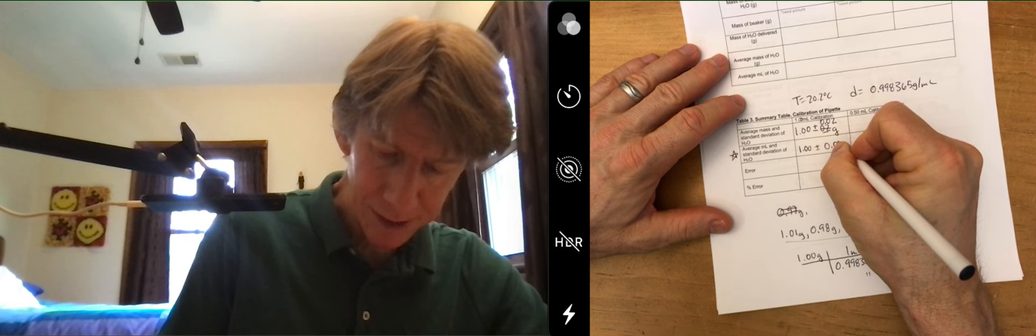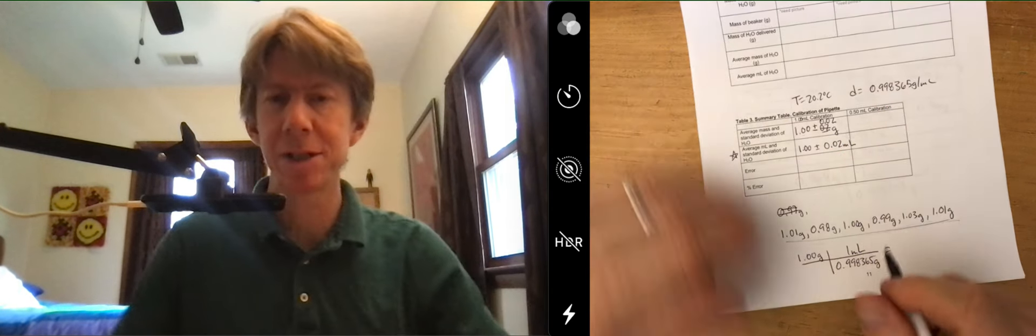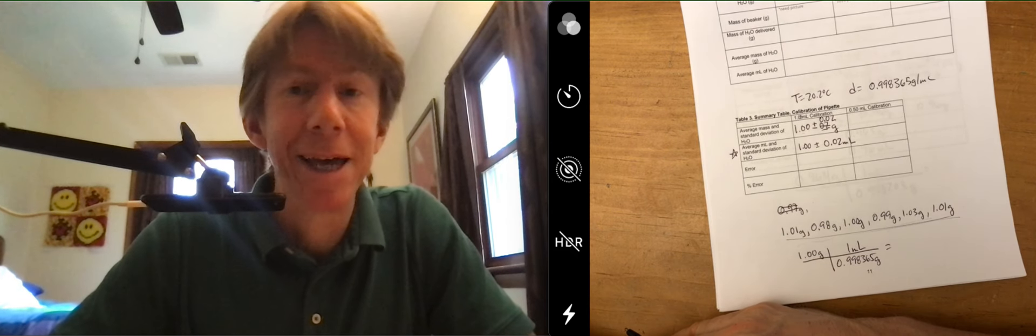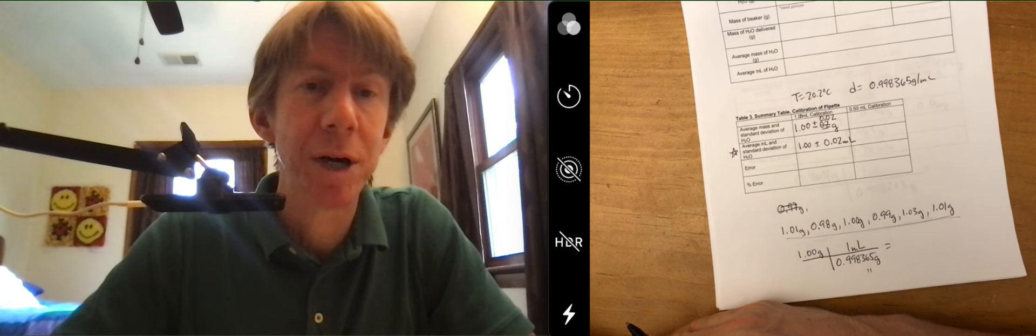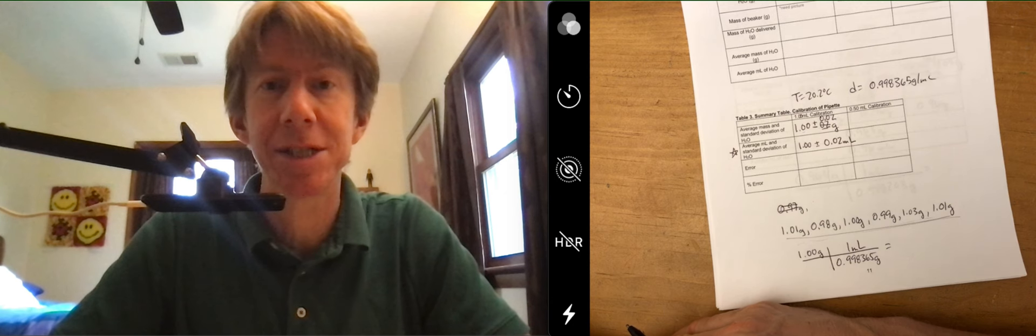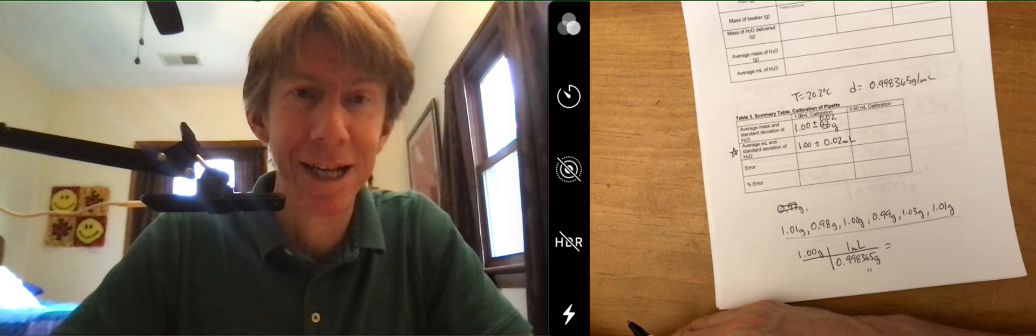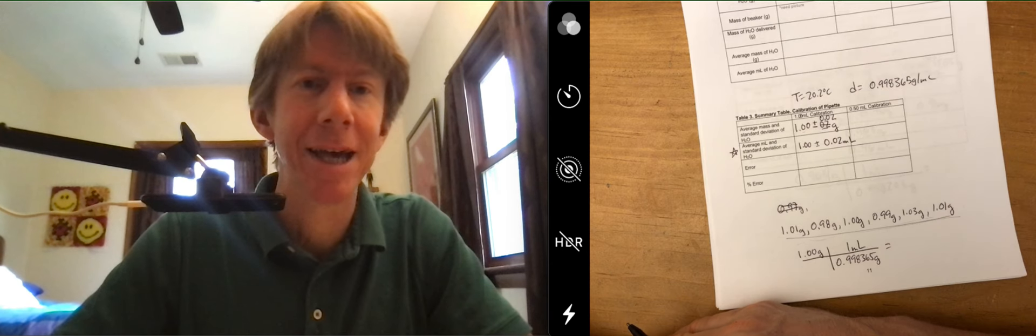And perhaps you understand why we use 1.00 grams per milliliter as the density of water. So even though it's not exact, it's very close and the difference rarely if ever will affect our calculations.